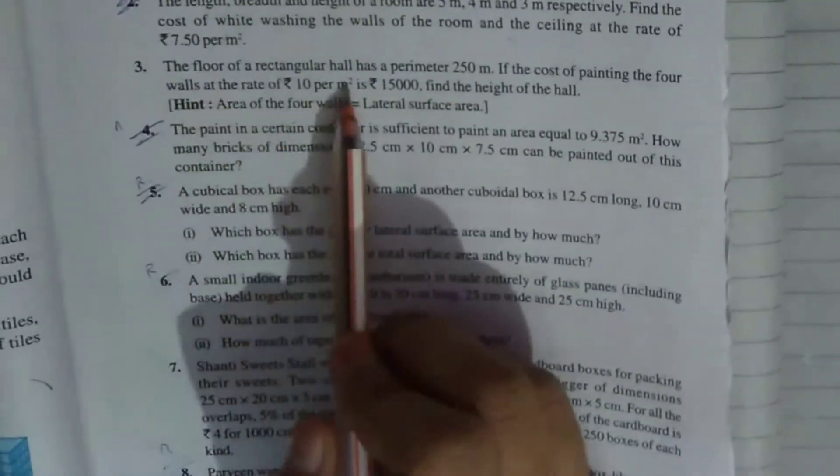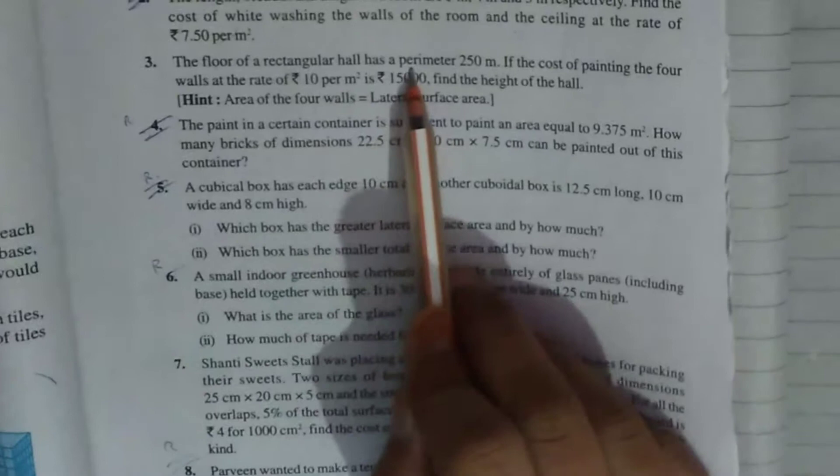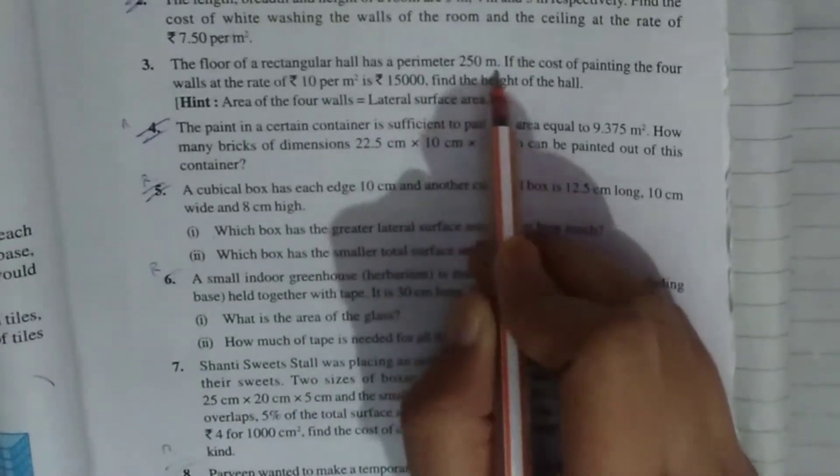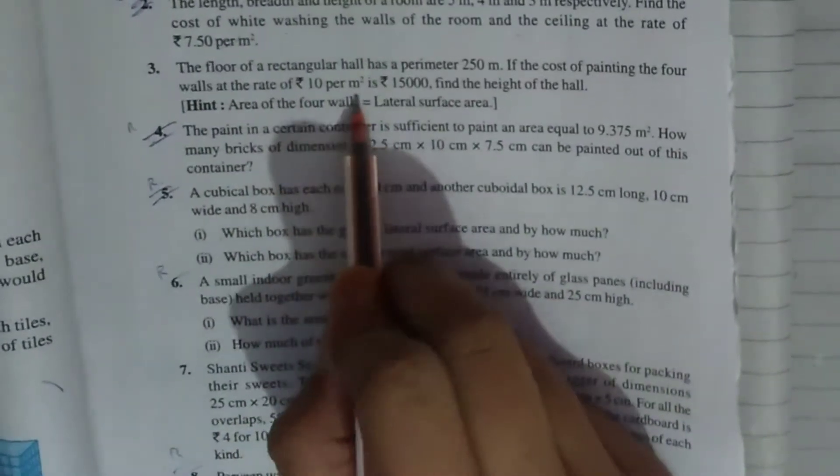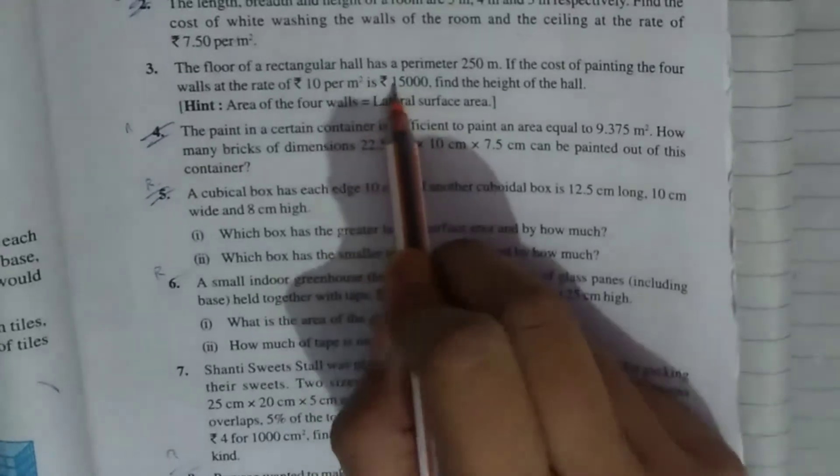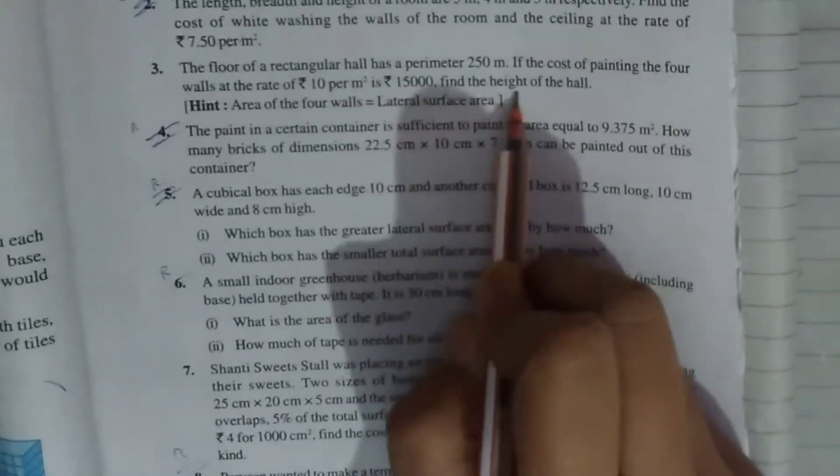The floor of a rectangular hall has a perimeter 250 meter. If the cost of painting the 4 walls at the rate of Rs. 10 per meter square is Rs. 15,000, find the height of the hall.